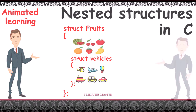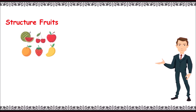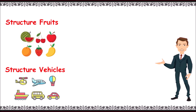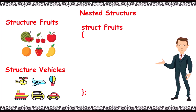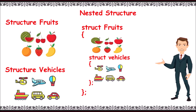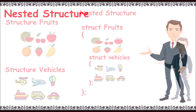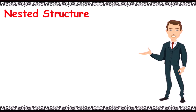Consider a structure 'fruits' and another structure 'vehicles'. In a nested structure, let's write structure 'fruits' first, then write the members in it, and then write structure 'vehicle' inside the fruit structure. Writing a structure inside another structure is called a nested structure.